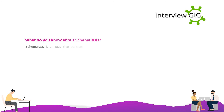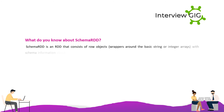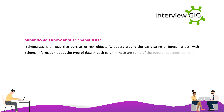What do you know about Schema RDD? Schema RDD is an RDD that consists of row objects — wrappers around basic string or integer arrays — with schema information about the type of data in each column.